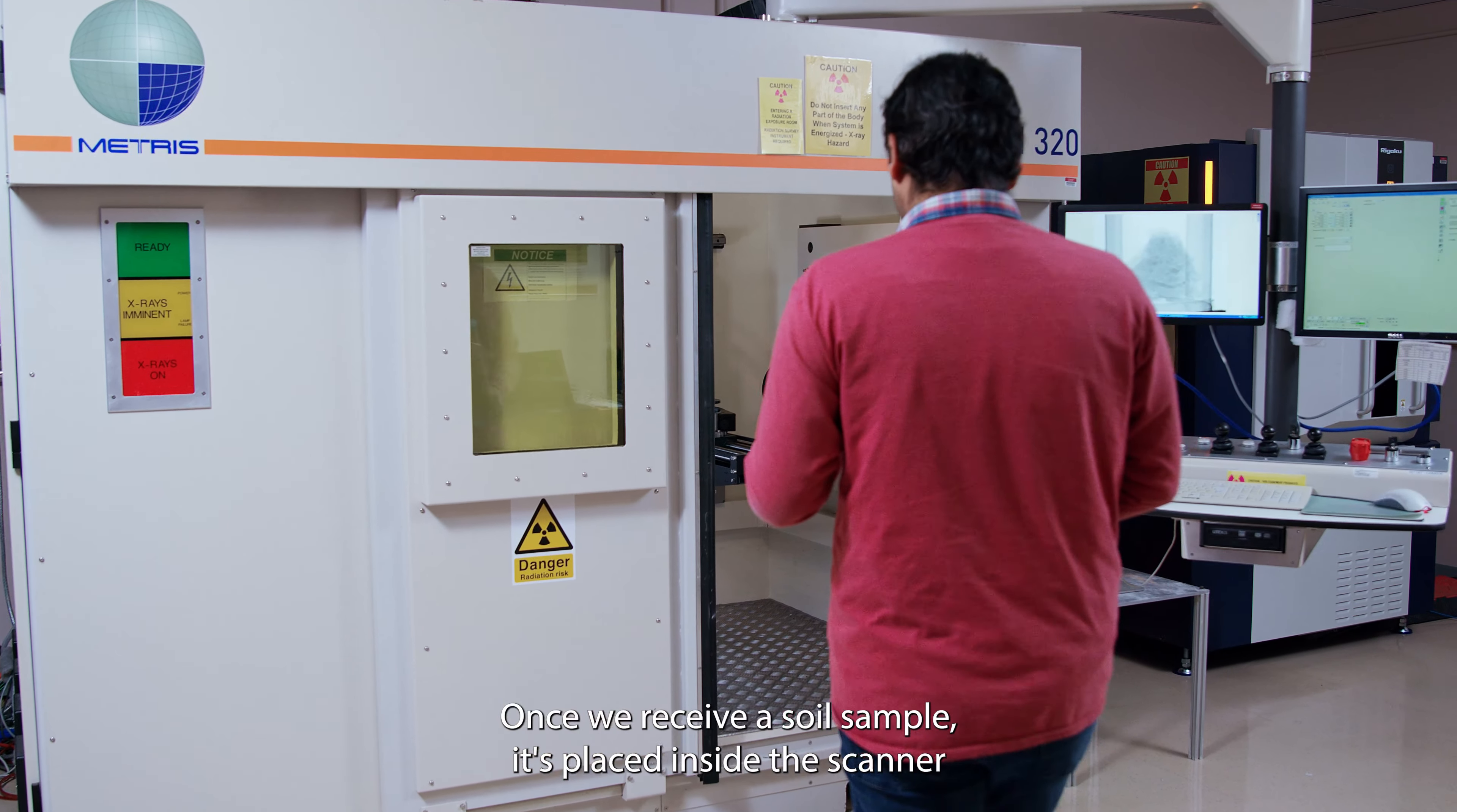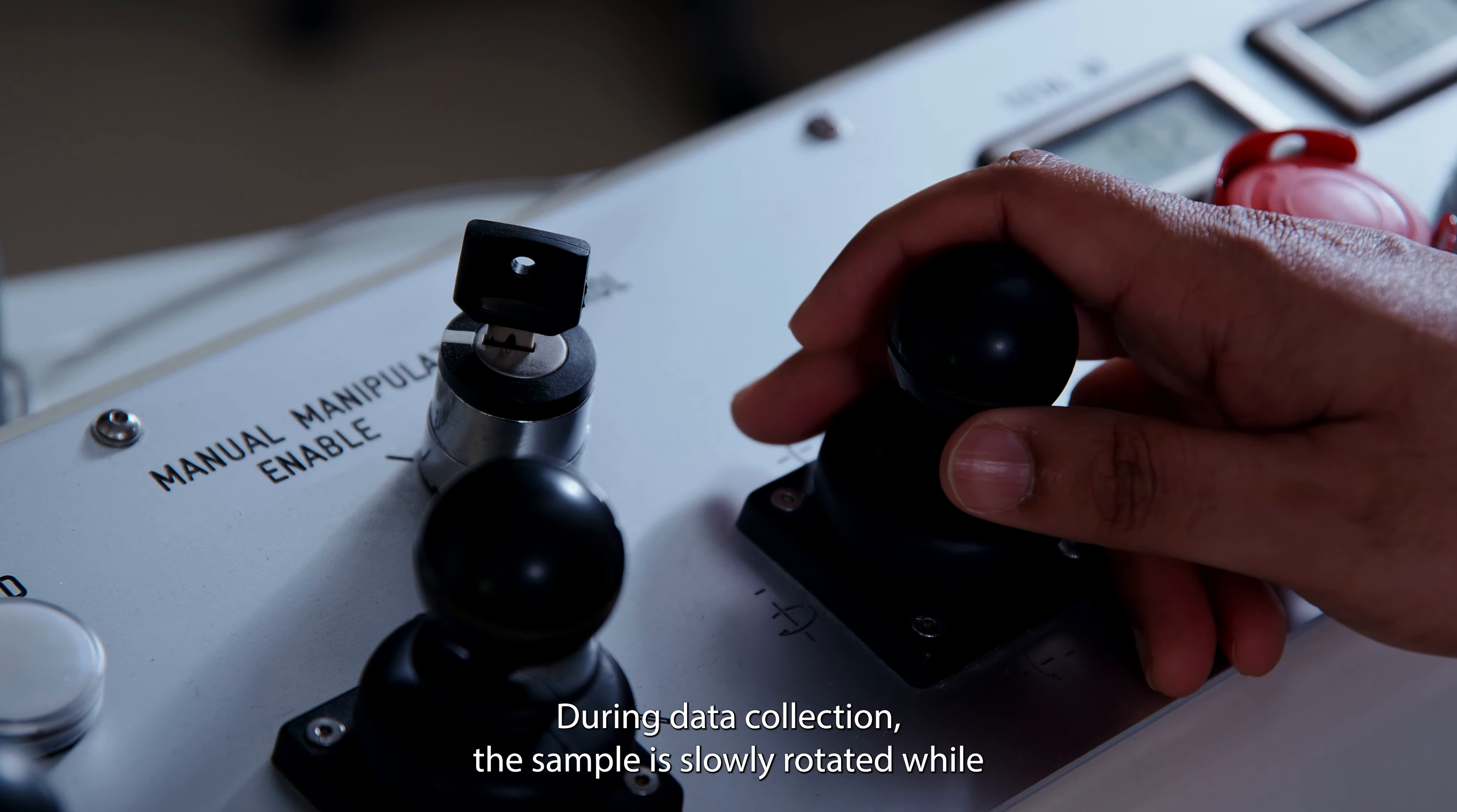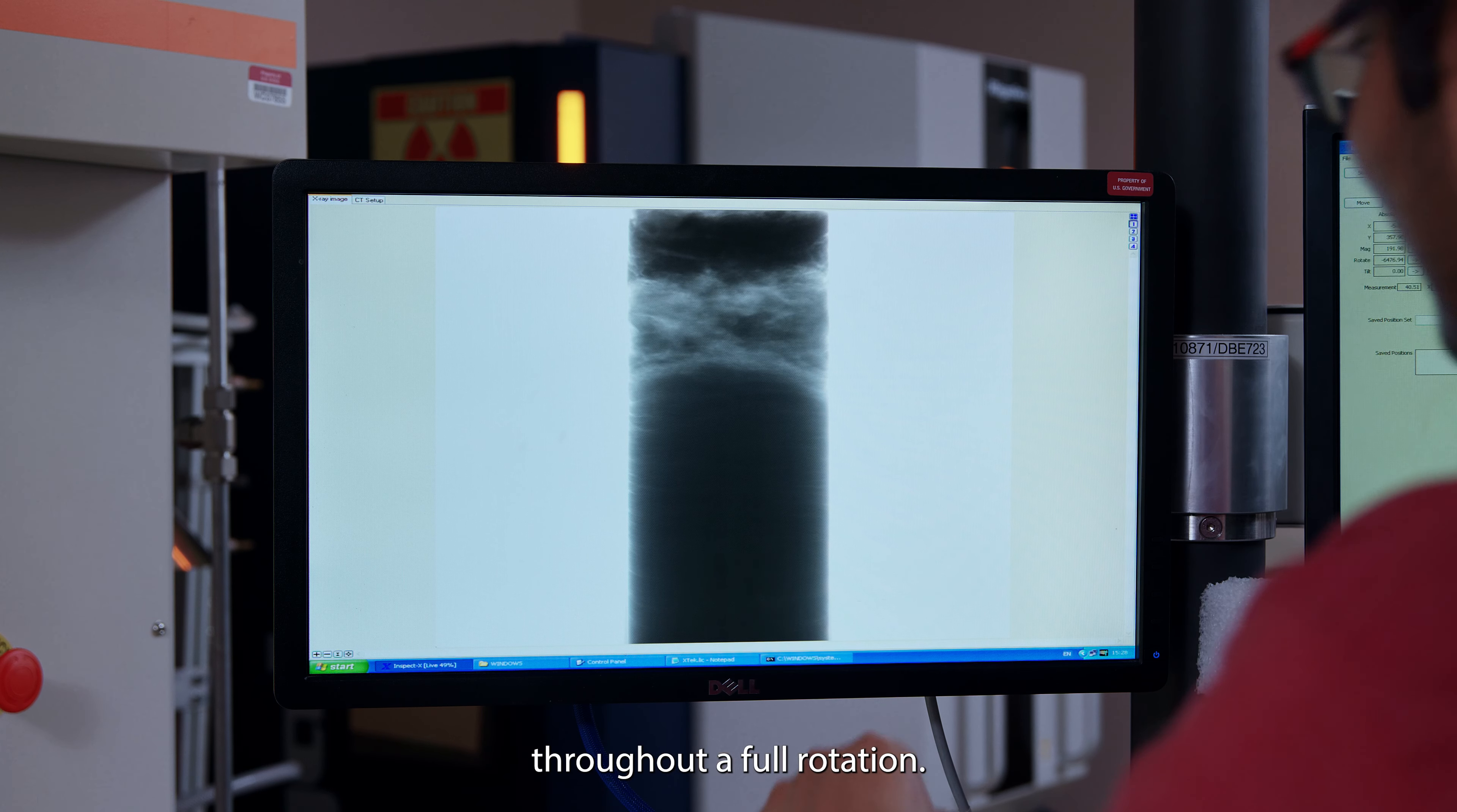Once we receive a soil sample, it's placed inside the scanner on a sample stage between the X-ray source and the detector. During data collection, the sample is slowly rotated while high-resolution X-ray images are recorded at many angles throughout a full rotation.